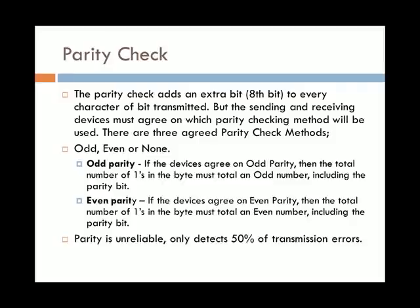With odd parity, if the devices agree on odd parity, then the total number of 1's in the byte must total an odd number, including the parity bit. With even parity, if the devices agree on even parity prior to transmission, then the total number of 1's in the byte must total an even number, including the parity bit. The problem with parity bit check is that it's unreliable and will often only pick up 50% of transmission errors. We'll see later that the idea of bit swapping can mean that parity check doesn't actually discover the incorrect data bits within the byte.